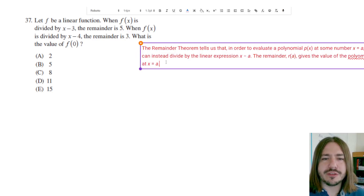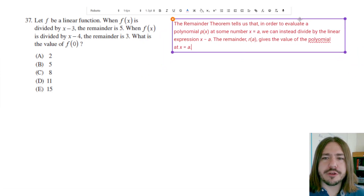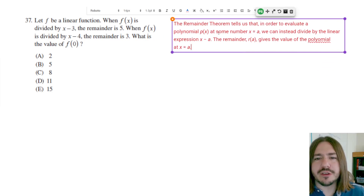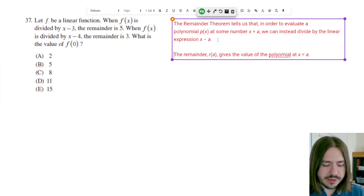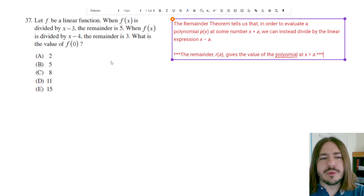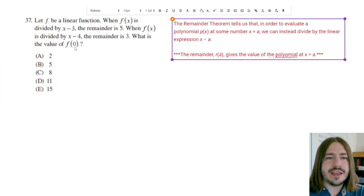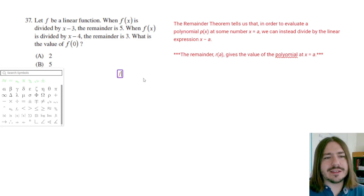Let me go ahead and throw it up here so you can see exactly what it's saying. The remainder theorem tells us that in order to evaluate a polynomial at some number, say just a, we can instead divide by the linear expression x minus a. And the remainder — here's the key point — the remainder r of a gives the value of the polynomial. So basically what this is saying is that if you divide f of x by x minus 3 and the remainder is 5, that's telling us that f of 3 is 5.